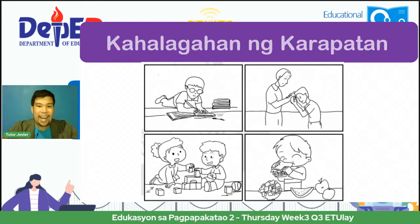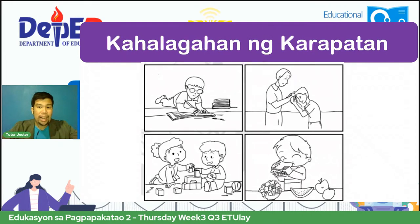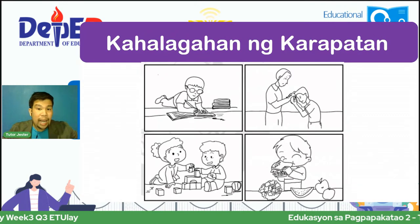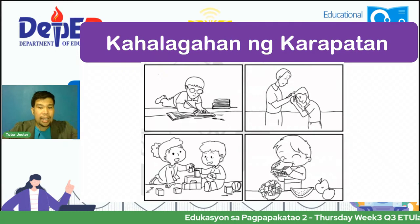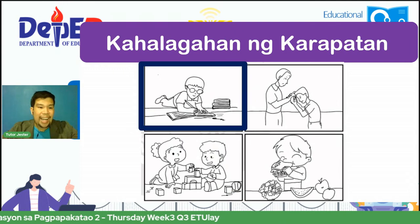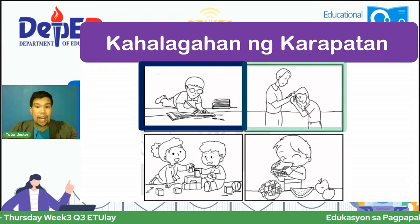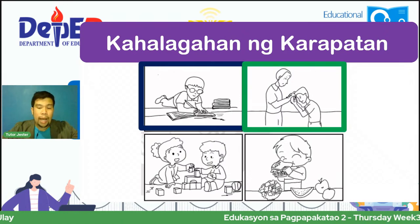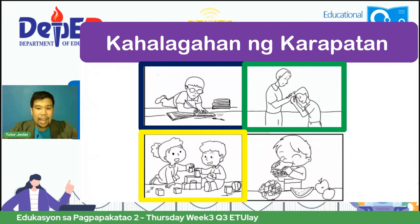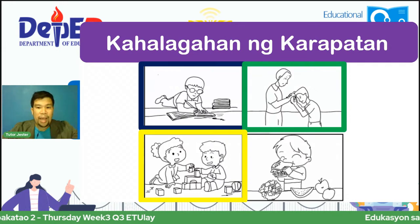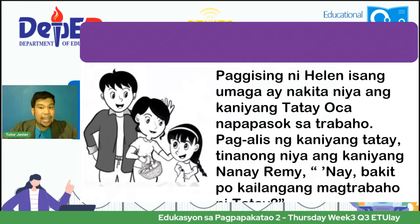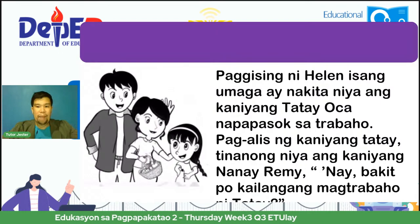Meron ditong larawan — apat na larawan. Aalamin natin kung bakit nga ba mahalaga na mapahalagahan natin ang ating karapatan. Sa unang larawan, ang isang bata na tila baga nag-aaral — nakarapatan natin makapag-aaral. Sa ikalawa, ang magkaroon ng ating mga magulang na mag-aaruga sa atin. Ikatlo, ang mga kaibigan o mga kasama sa buhay na talagang nagmamahal sa atin. At magkaroon din ng sapat na pagkain. Iisa-isahin natin yan mamaya lamang.